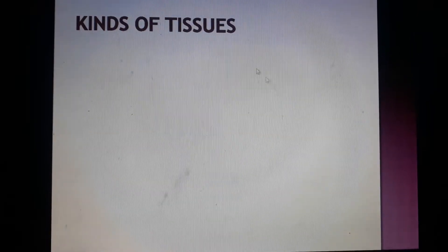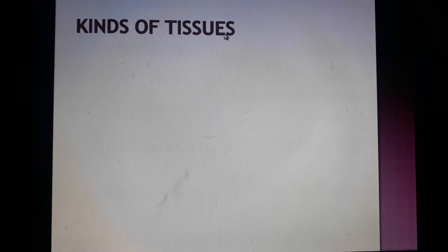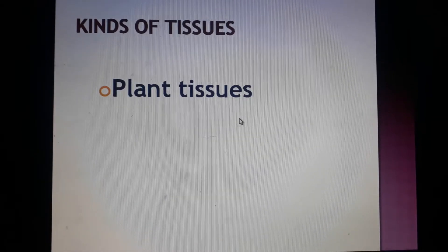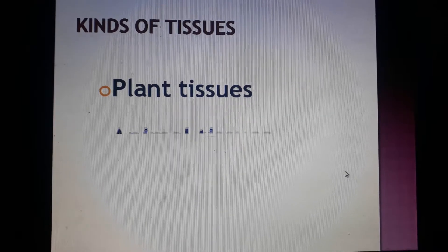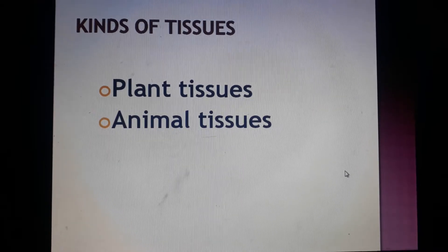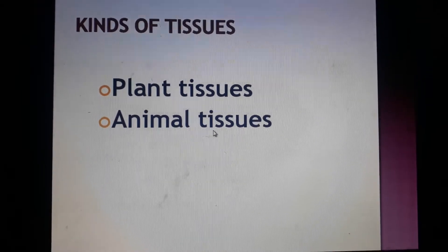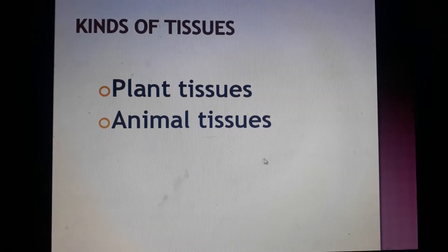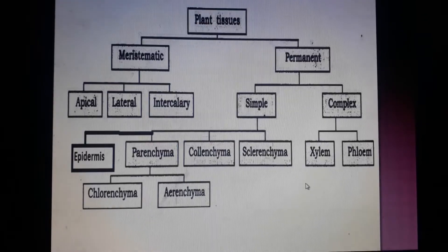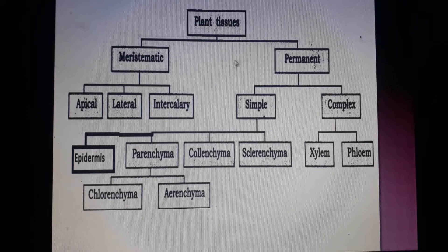Now there are different kinds of tissues. We will be studying about two kinds of tissues. These are plant tissues — the tissues that are present in plants — and animal tissues. So the two kinds of tissues are plant tissues and animal tissues. First we will be learning about plant tissues.